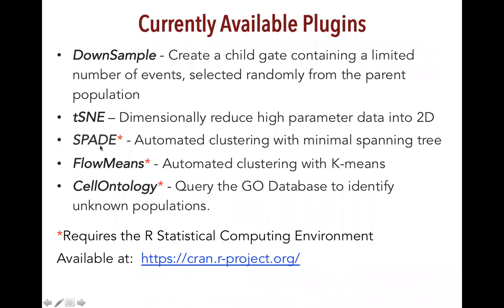SPADE, FlowMeans, and Cell Ontology require the R statistical computing environment — you have to set up R and download the packages for these algorithms before using them. When you run a plugin, you'll be asked to save your workspace. Each time you run a plugin operation, a file output is placed in a derivative folder named the same as your workspace and saved in the same location.